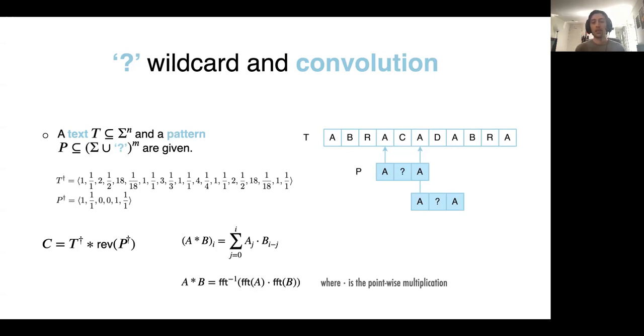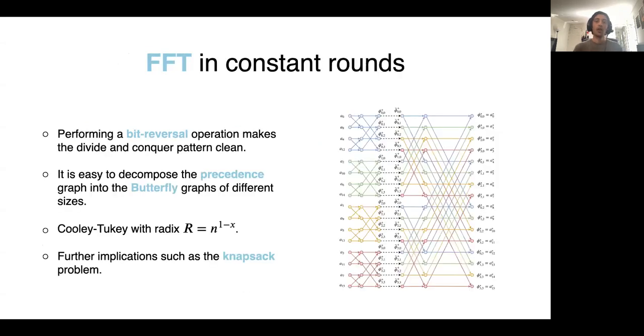And for solving the convolution, we can perform fast Fourier transforms on both arrays. After that, we can just do a point-wise multiplication and do a reverse transform. This way, we can solve the convolution problem in O(n log n) time in the sequential setting. But also in MPC, we can solve FFT in constant rounds. If we perform a bit reversal operation on the input, we have this graph of dependence that has nice properties.